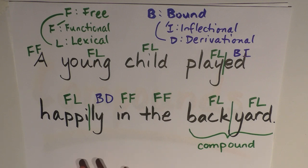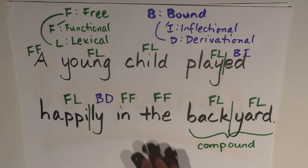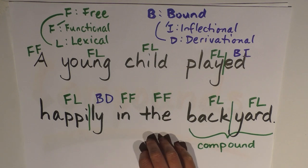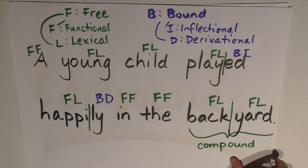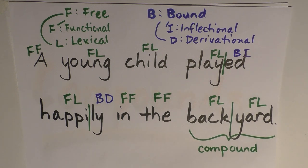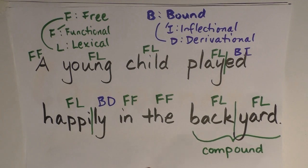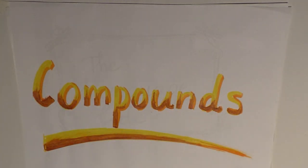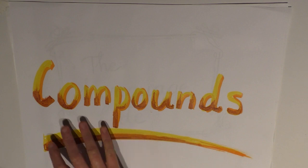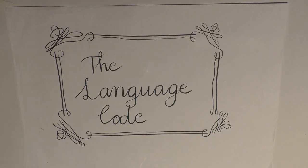So this is how we can identify free and bound morphemes, and for free and bound morphemes, whether they're functional, lexical, inflectional, or derivational. I hope that's helped — well done to you! We've been introduced to the different kinds of free morphemes, and the next video will explore compounding — the joining of two free morphemes to make a word. So until then, thanks for watching The Language Code.